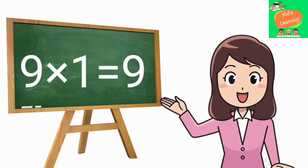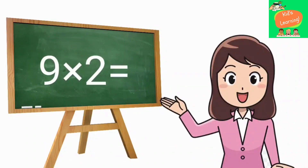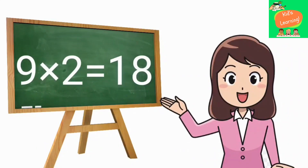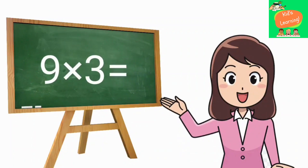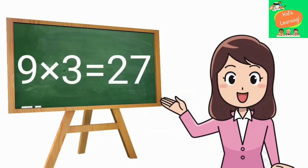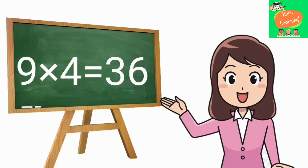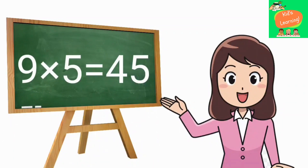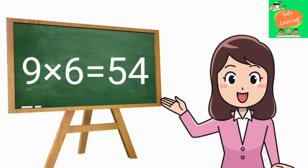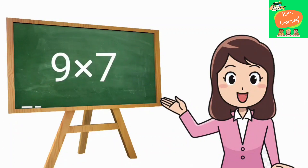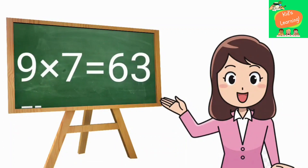9 1's are 9, 9 2's are 18, 9 3's are 27, 9 4's are 36, 9 5's are 45, 9 6's are 54, 9 7's are 63.